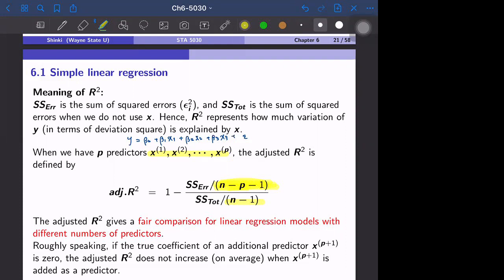And mathematically speaking, this adjusted R-square has the good property that expectation of adjusted R-square equals 0 if all predictors are useless. So that means beta_1, beta_2, up to beta_p equals 0, then adjusted R-square is around 0.